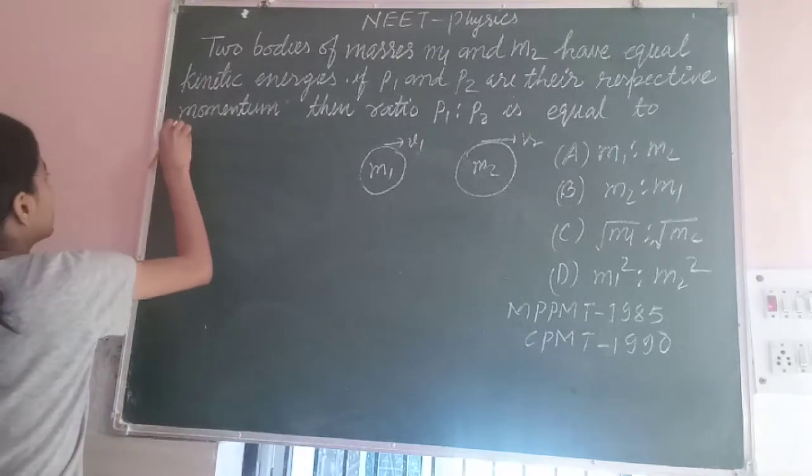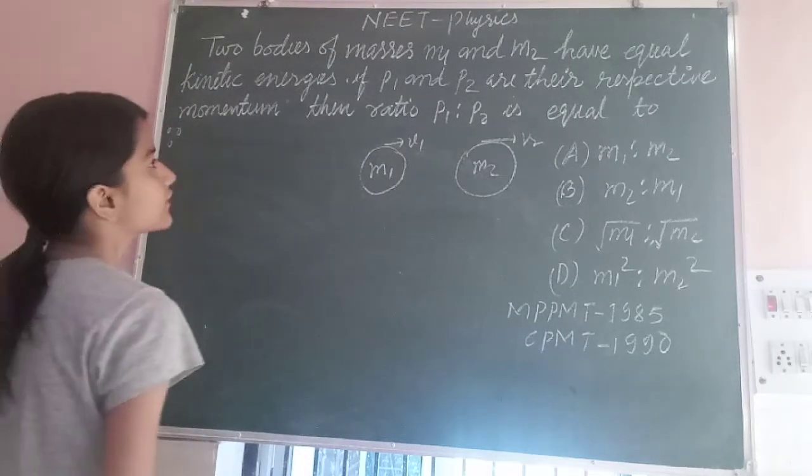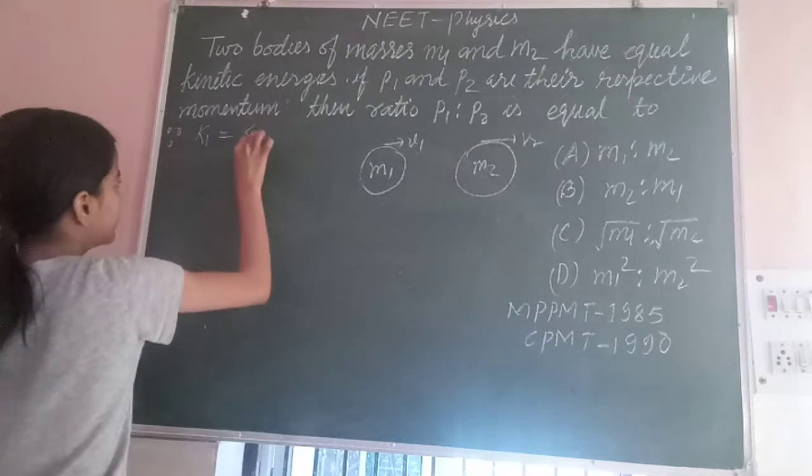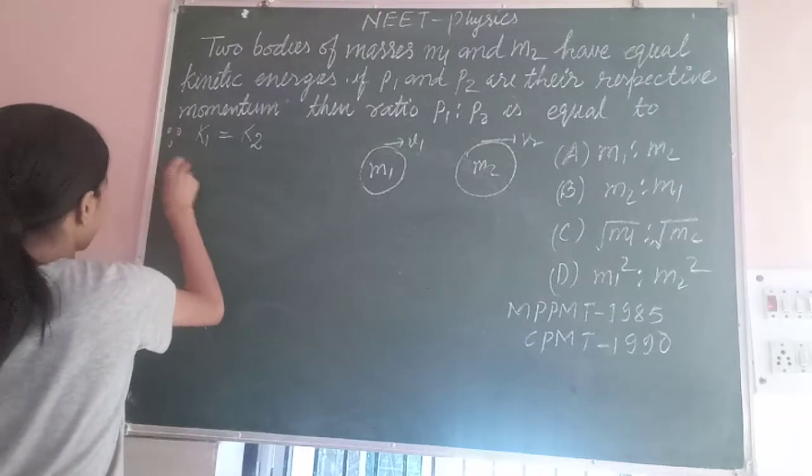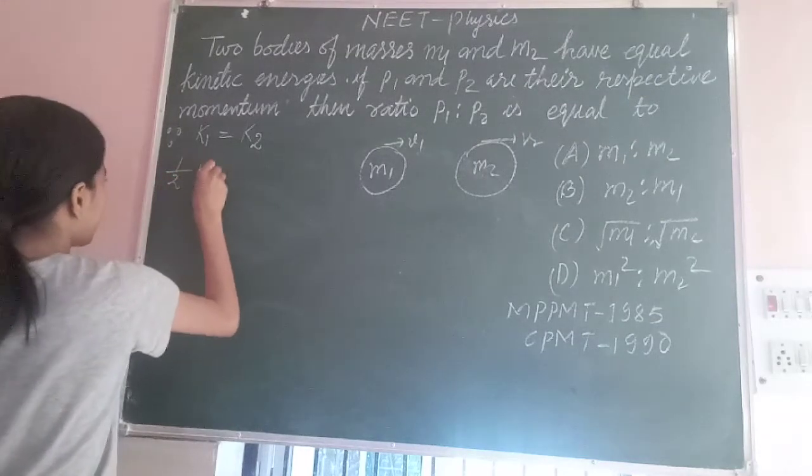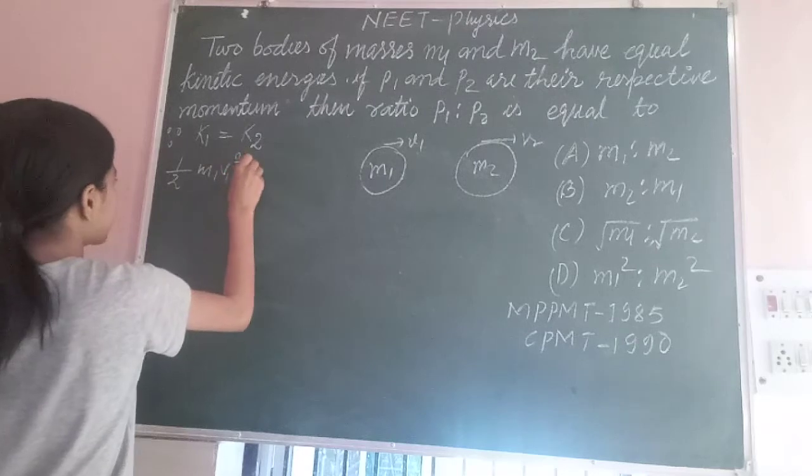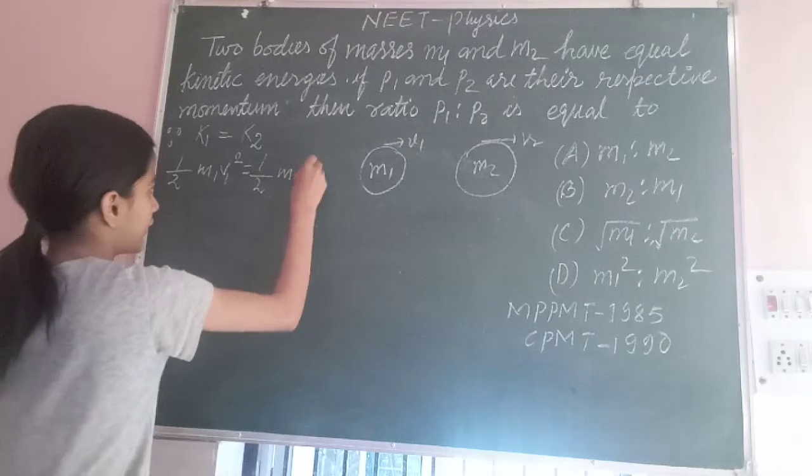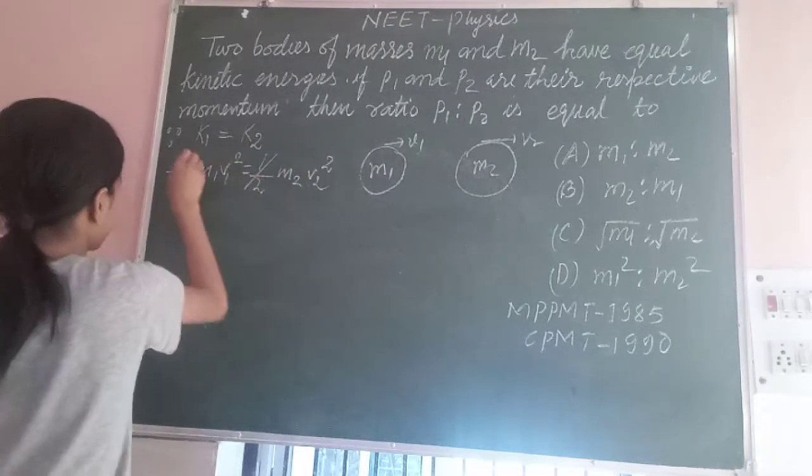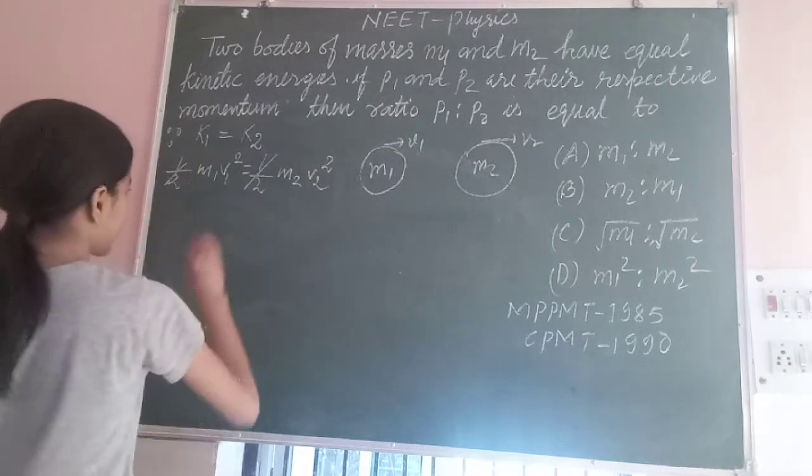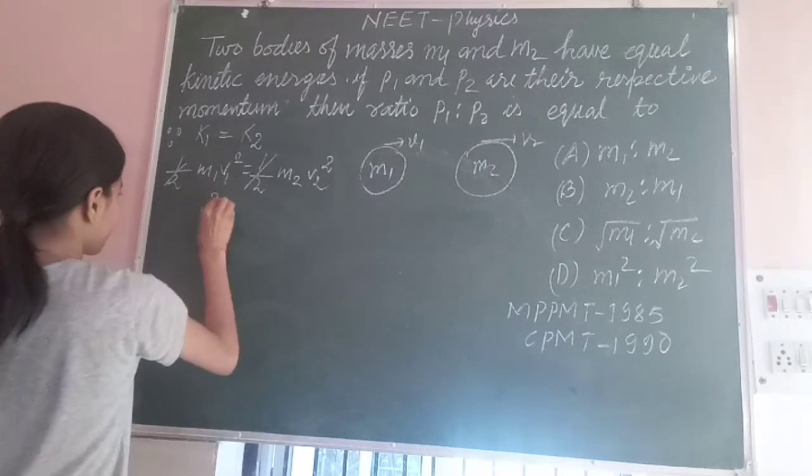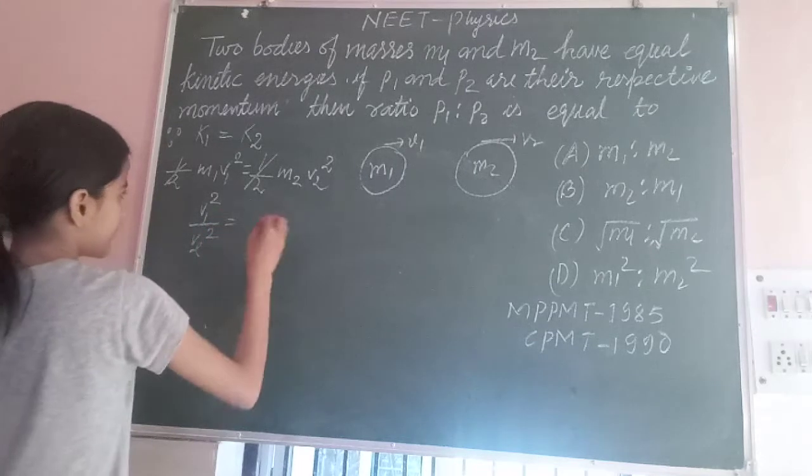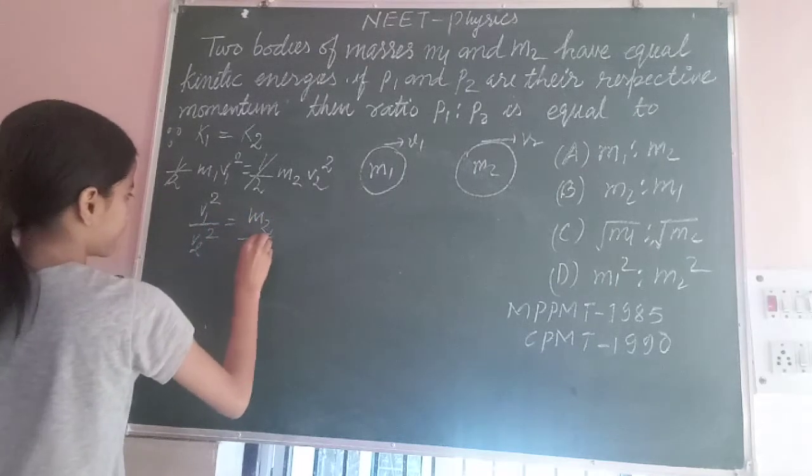Since K1 is equal to K2, so K1 is equal to half M1 V1 square and K2 is equal to half M2 V2 square. This half will cut with this half, so we will get V1 square upon V2 square which is equal to M2 over M1.